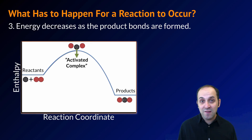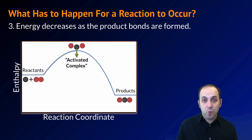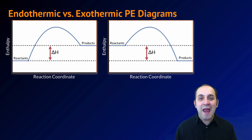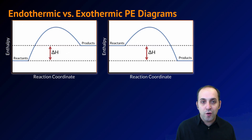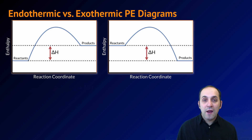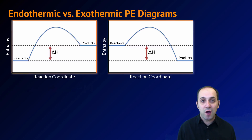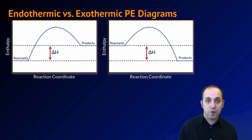We can represent any reaction as a potential energy diagram, and that includes endothermic and exothermic reactions. Here I've got an example of an endothermic and an exothermic potential energy diagram. If you can't tell which one is which, you can always take the energy in the products and subtract the energy in the reactants from it, figure out if that's positive or negative, and use that to tell the difference.